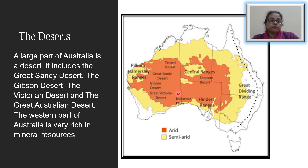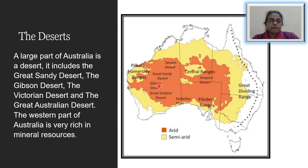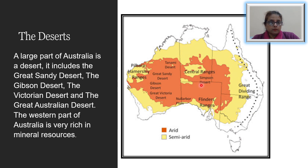The western part of Australia is an area very rich in mineral resources. Pastoral stations are located in the southern part of the plateau, which has a milder and somewhat wetter climate than the northern part of Western Australia.